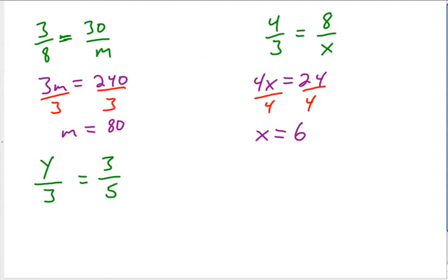Some of you might be thinking, why waste our time doing that when it's obvious that we can just multiply the top and bottom by ten to get m is eighty, or multiply the top and bottom by two to get x equals six. And you'd be right. The time where that doesn't work would be in this example, where there's nothing that three will multiply to to become five, or no whole number.